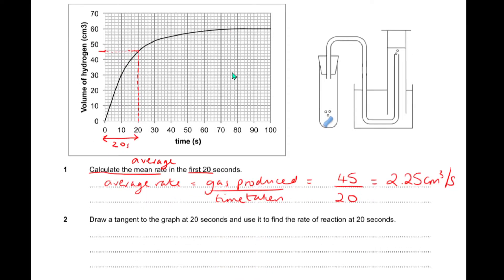The next question says, draw a tangent to the graph at 20 seconds and use it to find the rate at 20 seconds. This is now asking us for a precise rate of reaction. I'm going to put a little x on the graph because I know I want to find the rate at that point. Now, a tangent is a straight line that touches a curve and matches the slope at the point of the curve we're looking at. I can draw a line and put it in around there.